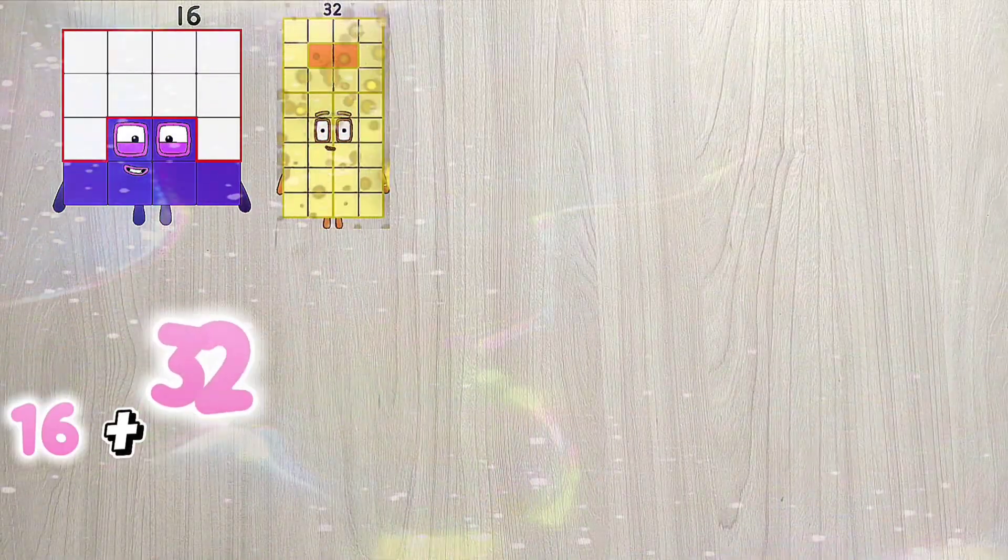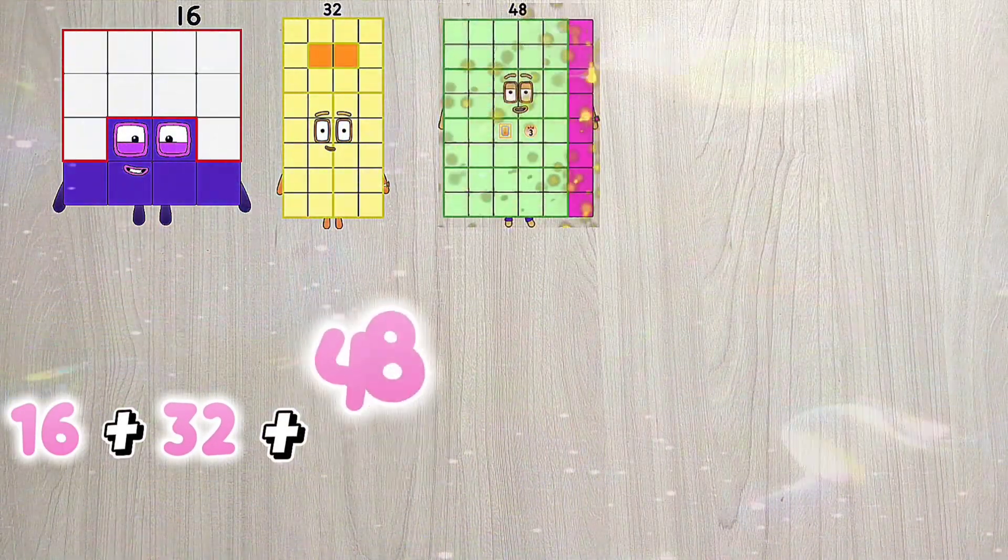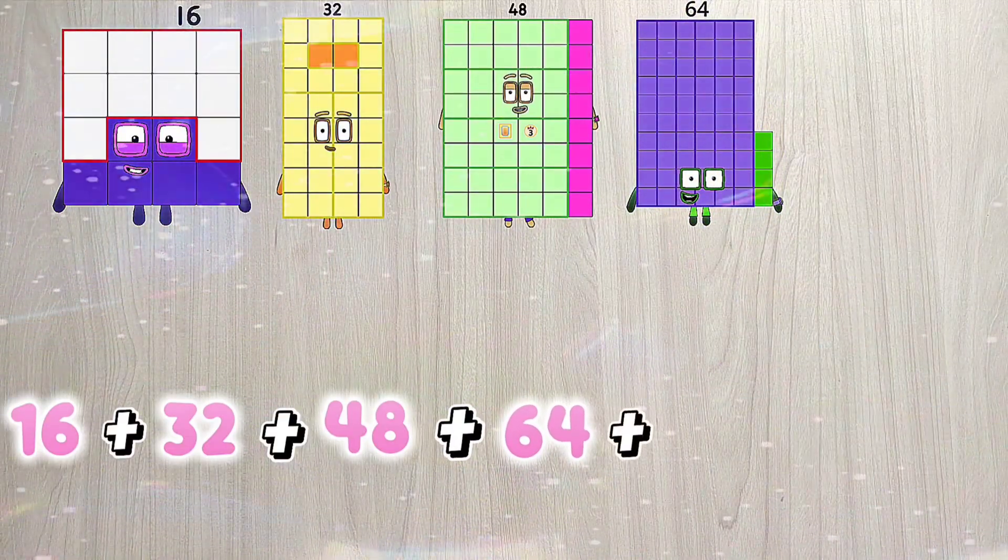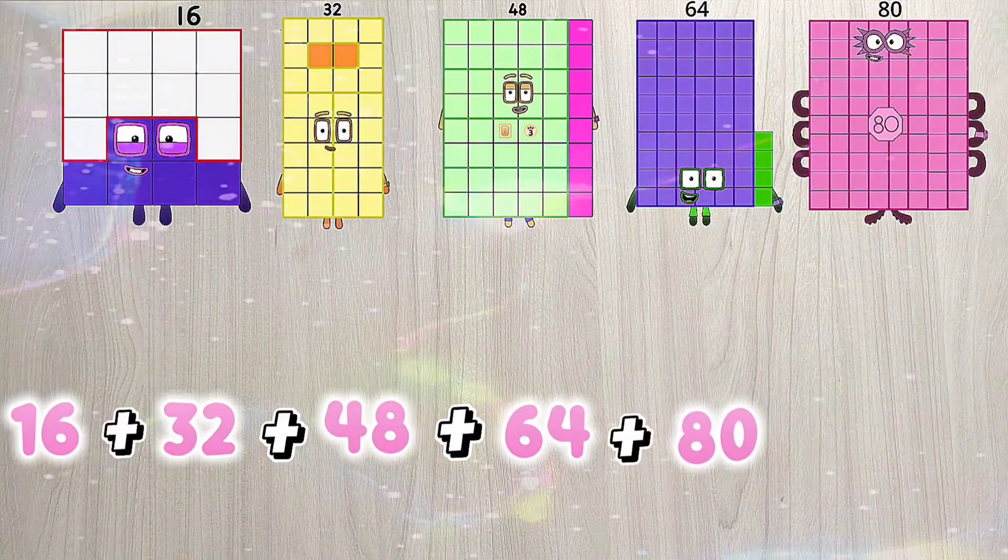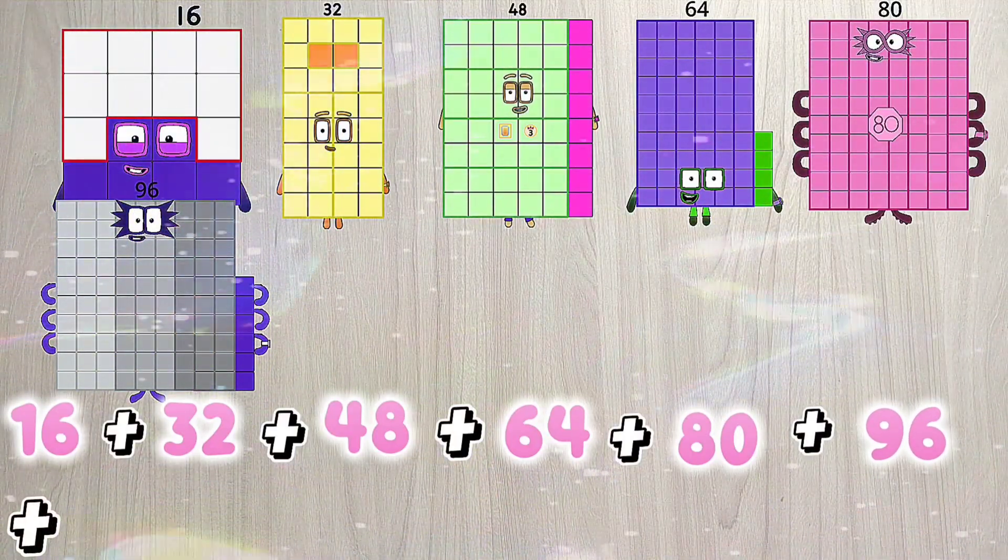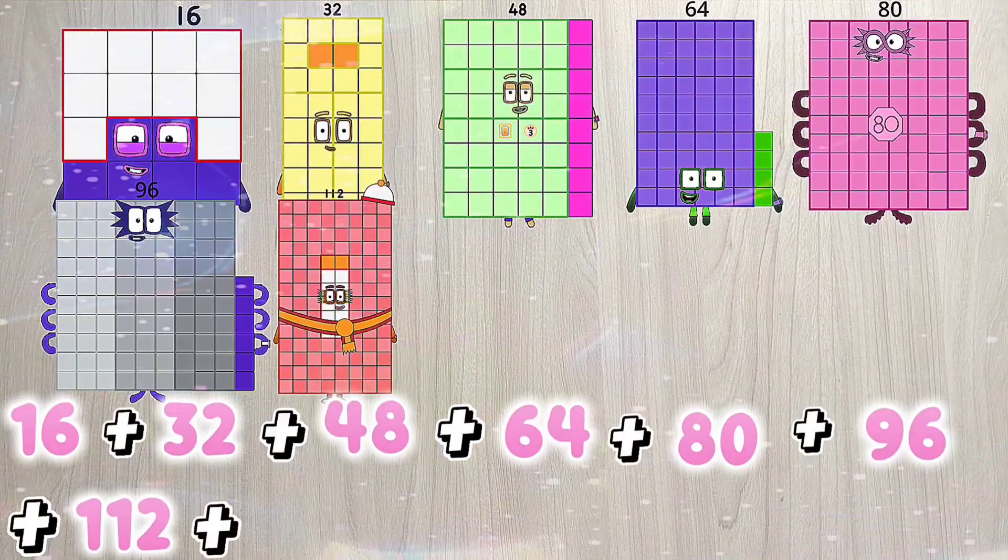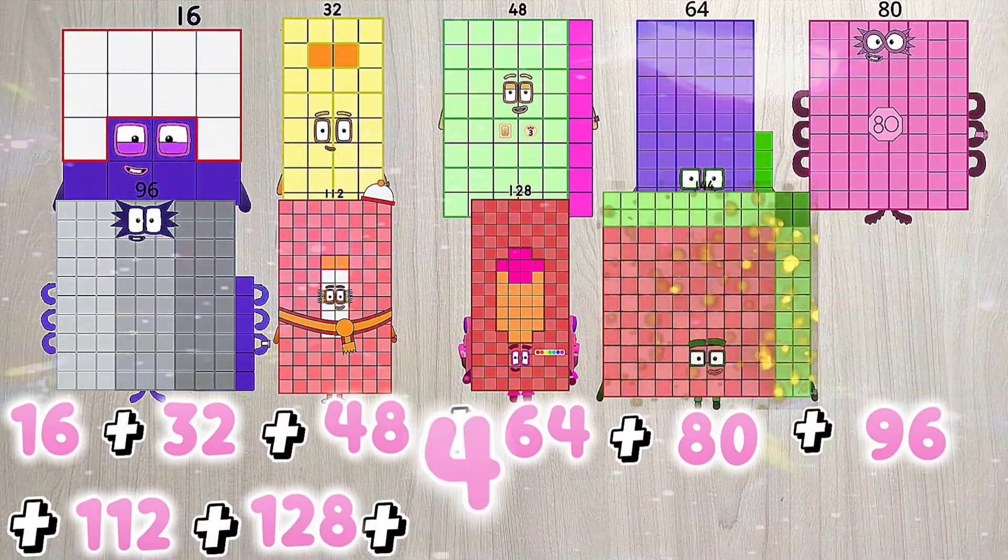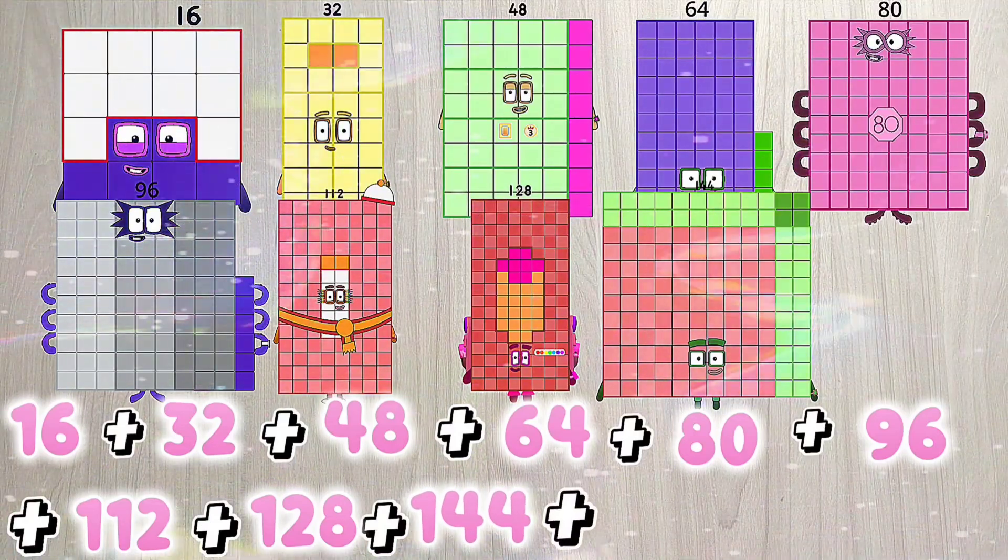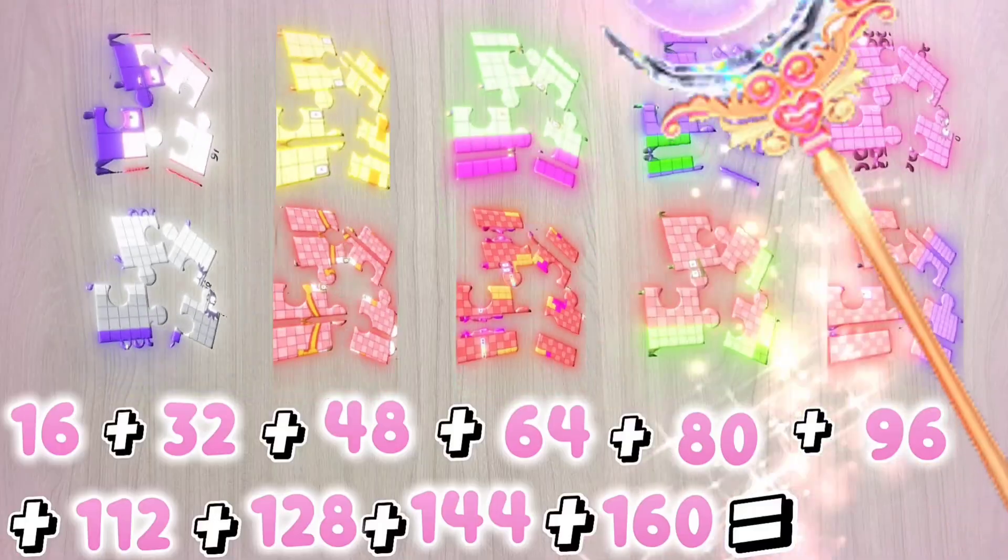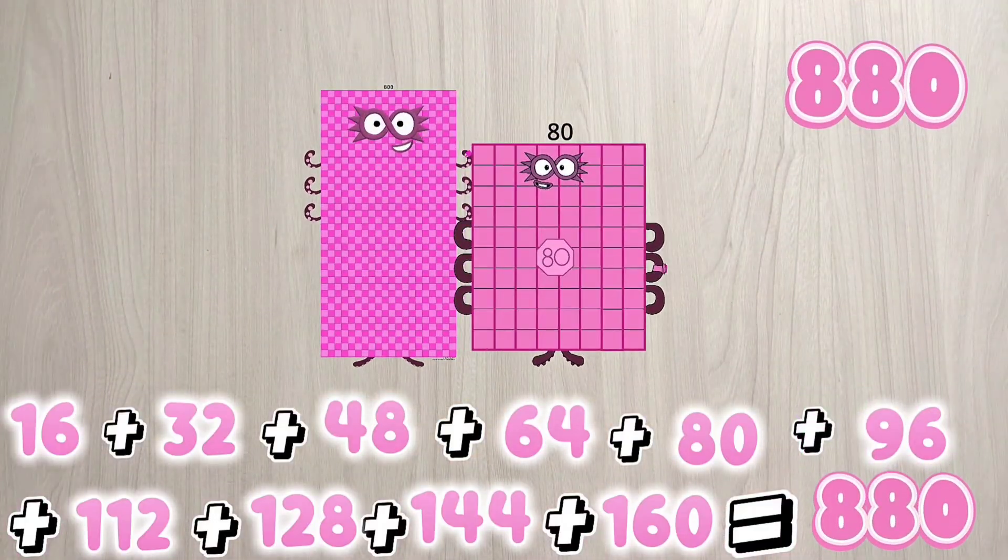16 plus 32 plus 48 plus 64 plus 80 plus 96 plus 112 plus 128 plus 144 plus 160 equals 880.